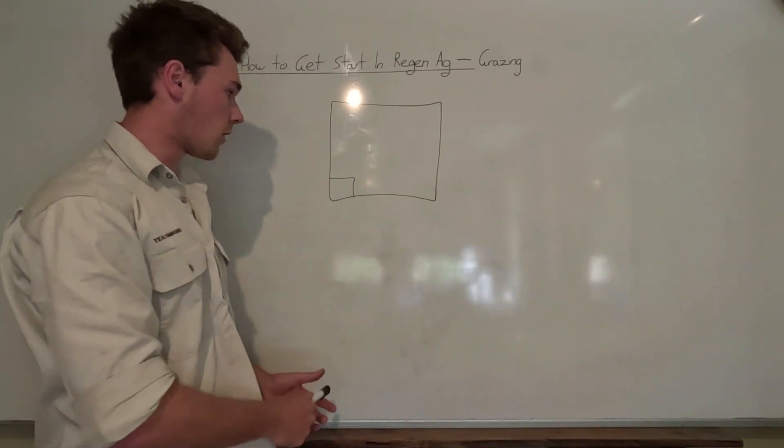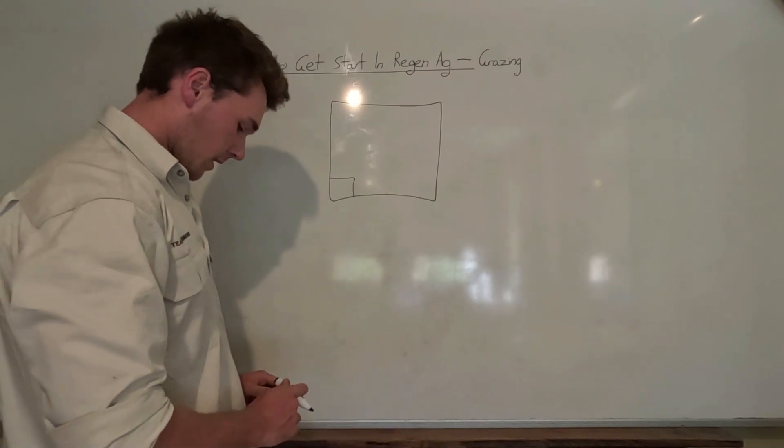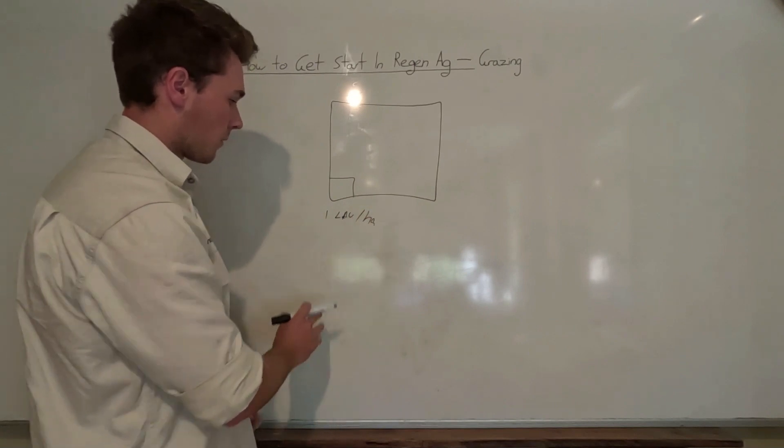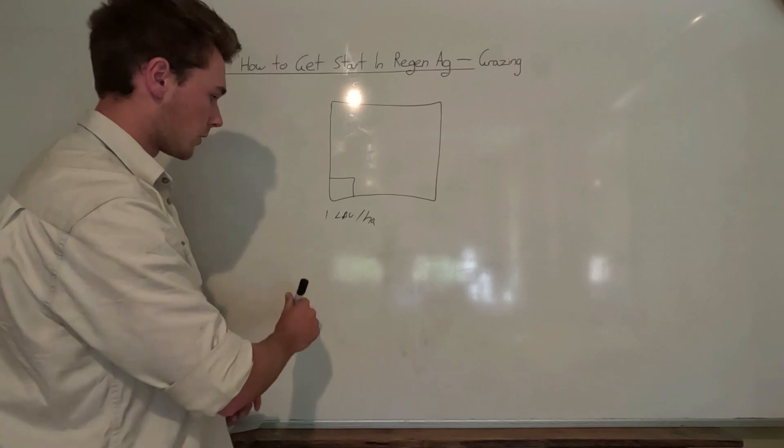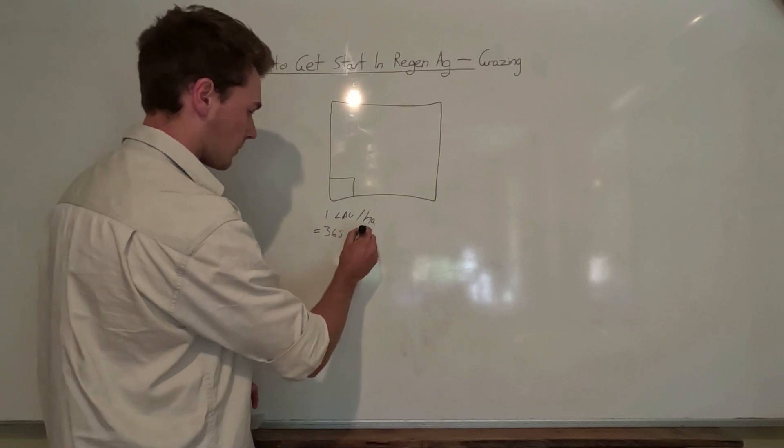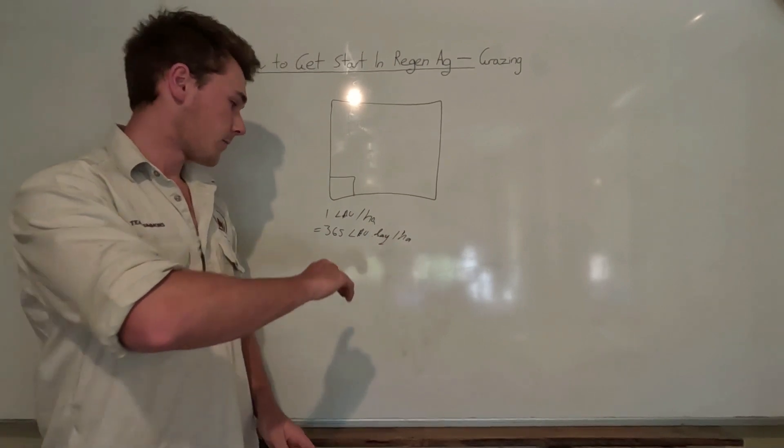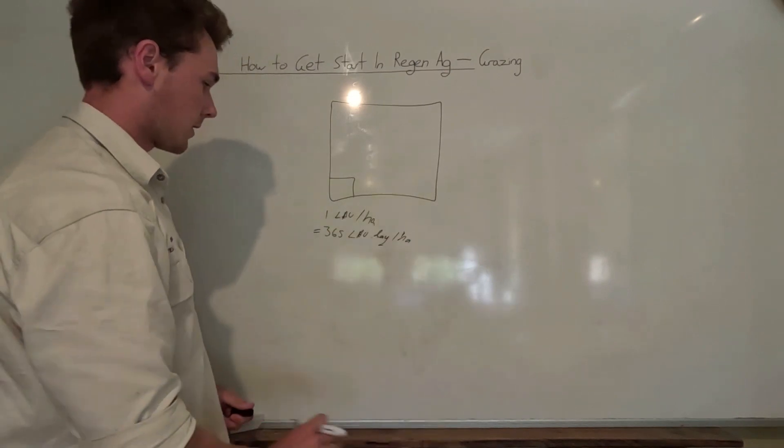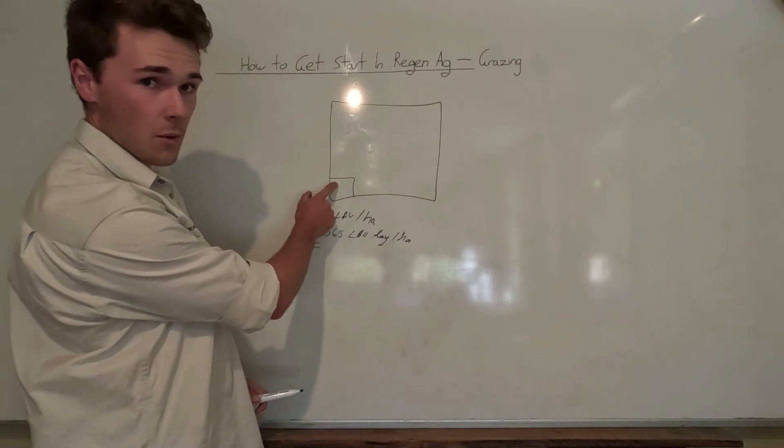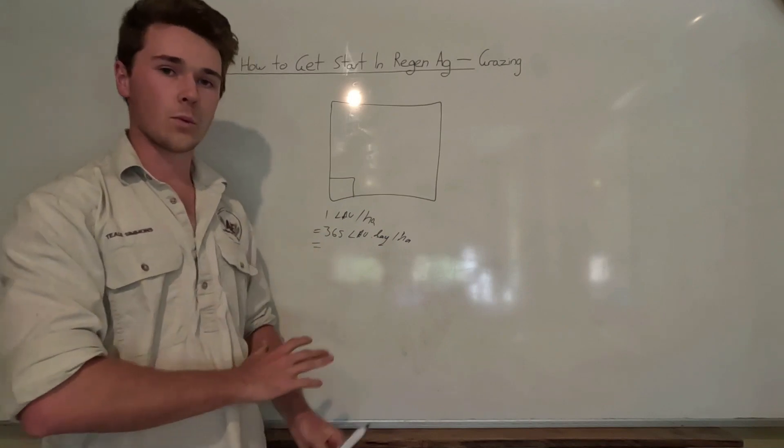I want you to stock this tiny bit of a paddock to a stocking density equal to your carry capacity. So what I mean by that is, say your land does about one large animal unit per hectare, which means that across a whole year your land will supply 365 large animal unit days per hectare. What I want you to do is I want you to graze it for one day. So if you have 365 large animals, I want you to put them all into that one paddock essentially, so we want to go super high density for a short period of time.